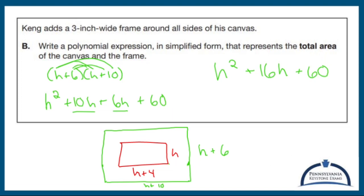Combine the like terms in the middle. And you have h squared plus 16h plus 60. That's my answer. Simplified form. It's a FOIL problem. Bada bing.